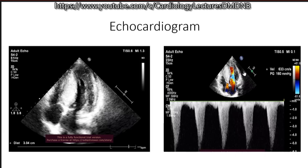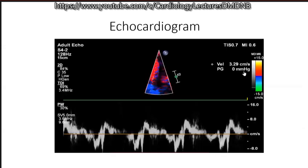The LVOT obstruction will show a dagger pattern on the Doppler envelope, which is classical of HOCM, while valvular obstruction shows a parabolic signal. This is the spectral representation of the continuous wave Doppler across the LVOT showing a peak gradient of 160 mmHg, which is a significant gradient.